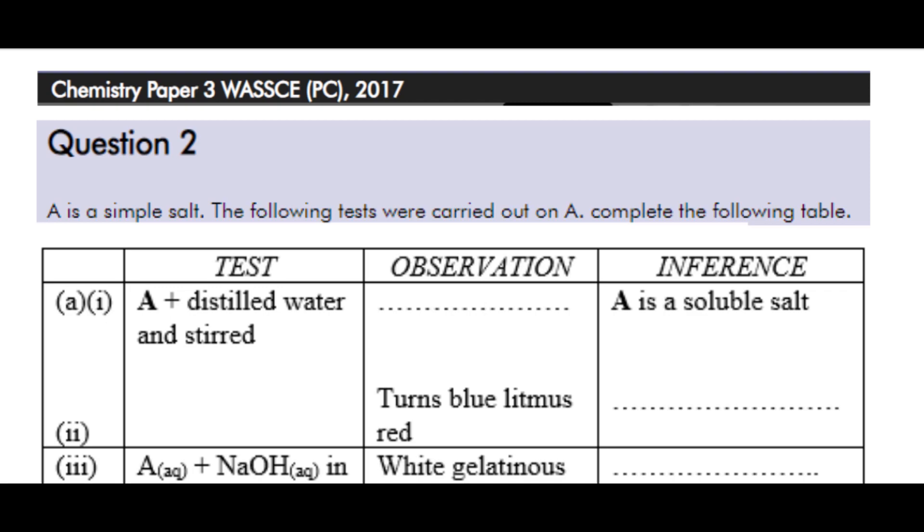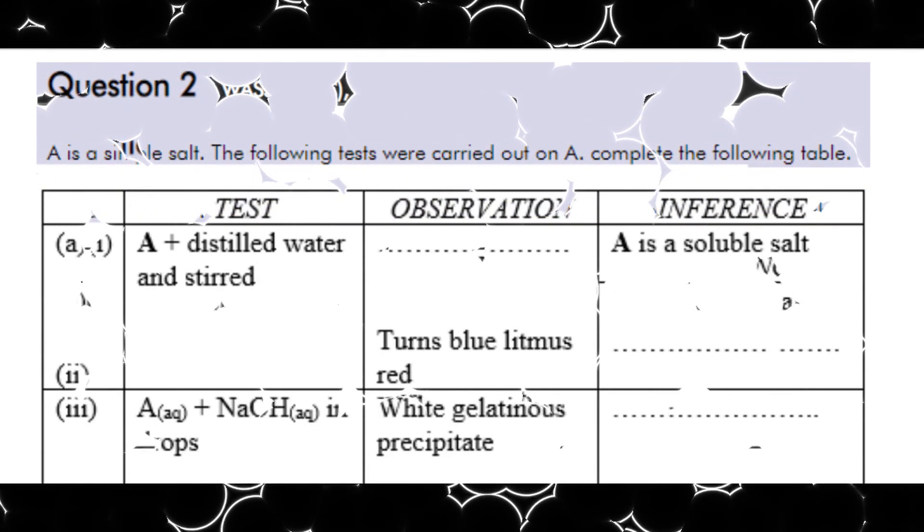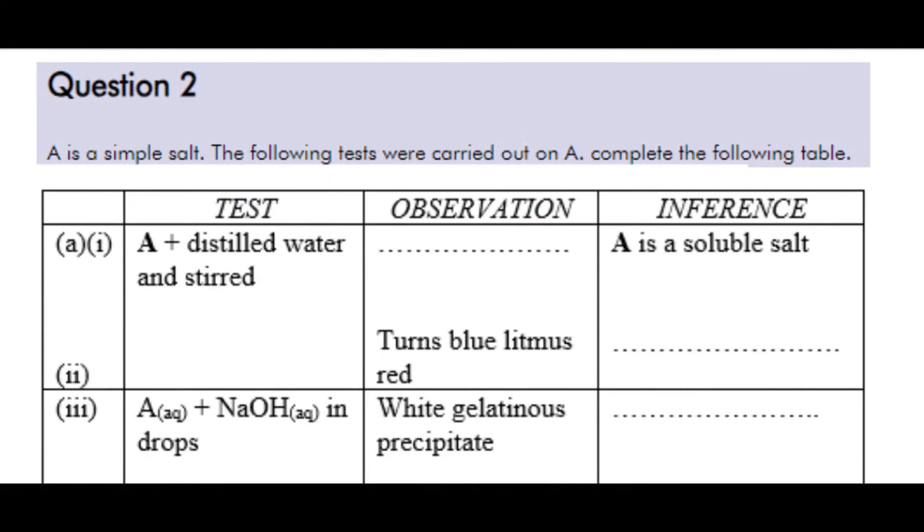Whether there was a colored ion or a color precipitate that was formed or it was just a white precipitate. As you can see from here, you observe that aqueous A plus sodium hydroxide in drops gives us white gelatinous precipitate. So for the fact that gives us a white precipitate, it means that it is not a colored ion that is present. It can either be zinc, aluminum or lead. And if it is any of those three, then the solution here would be a colorless solution.